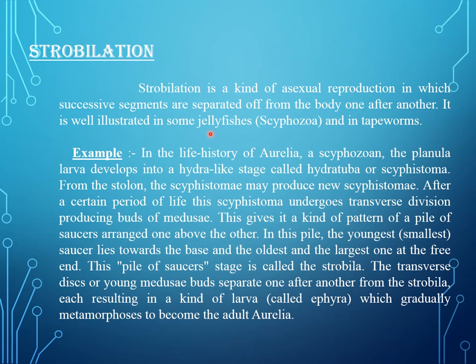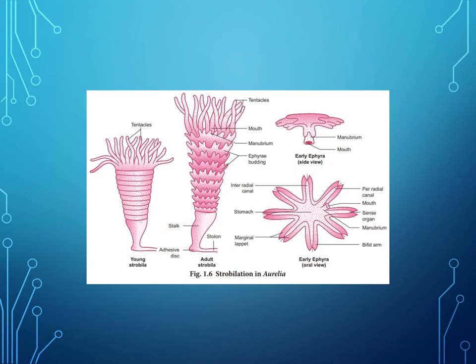Strobilation is a kind of asexual reproduction in which successive segments are separated off from the body one after another. It is well illustrated in some jellyfish and in tapeworms. This is the diagram of strobilation in Aurelia.